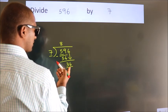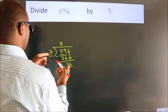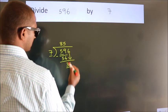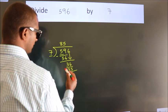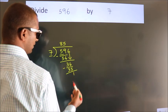A number close to 36 in the 7 table is 7 times 5, 35. Now we subtract. We get 1.